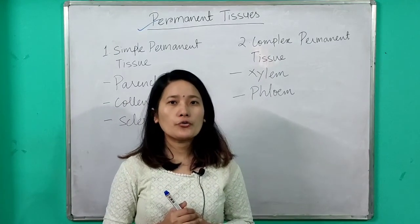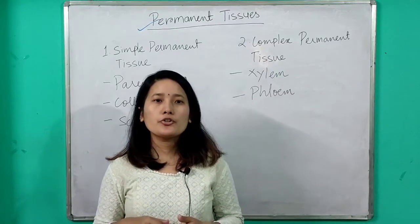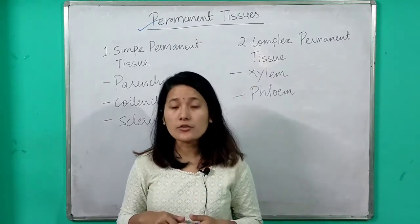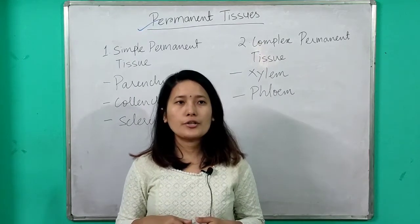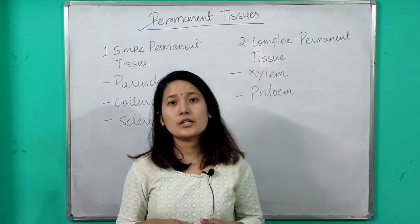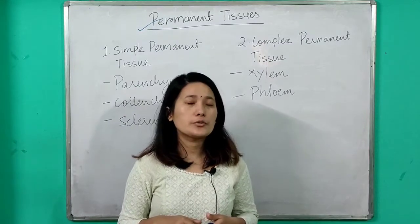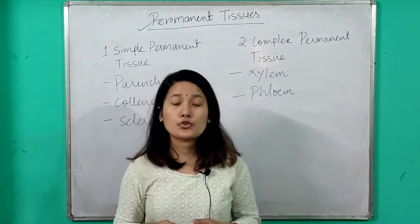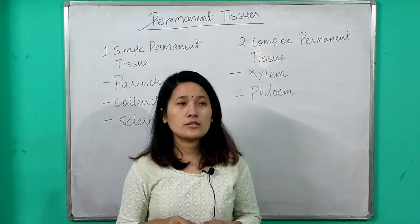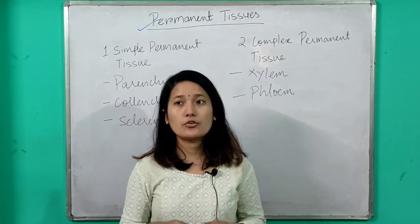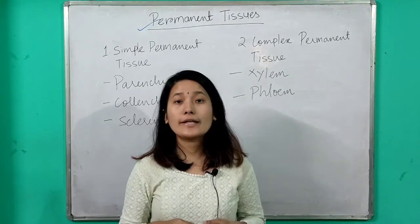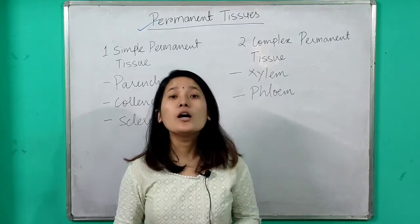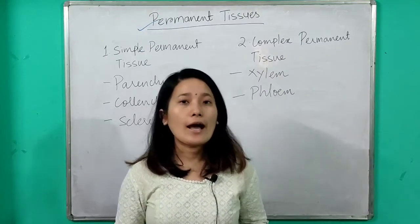Unlike meristematic tissue which has a role in growth of a plant, permanent tissue has specific functions to perform in plants. For example, complex permanent tissue helps in conduction of water or food. Some help in storage of food, and some provide flexibility, mechanical strength, or turgidity to the plant. They do not help in the growth of the plant.